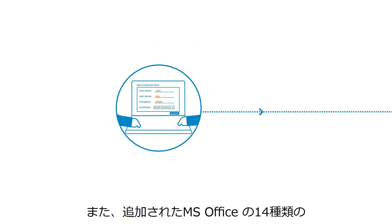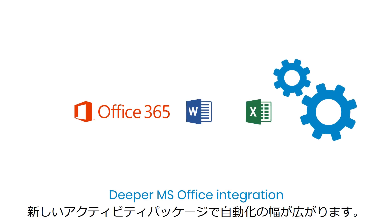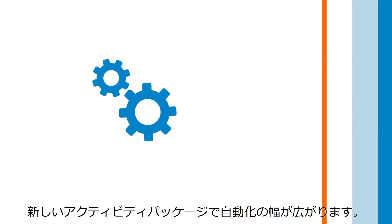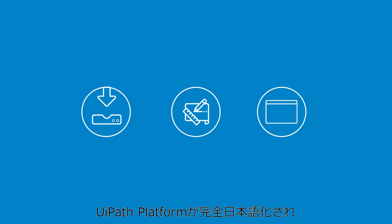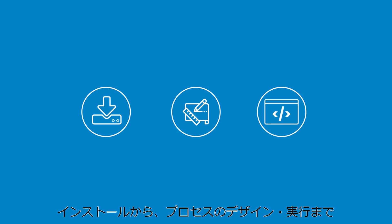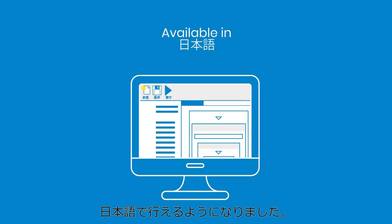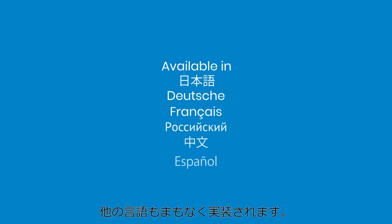Do more with the MS Office Activities package featuring 14 new activities. Experience the install, design, and execution process natively as the entire UiPath platform is now available in Japanese, with more languages following soon.